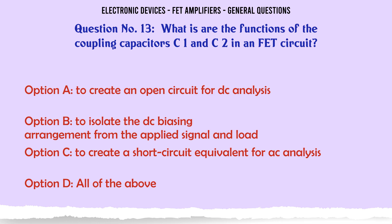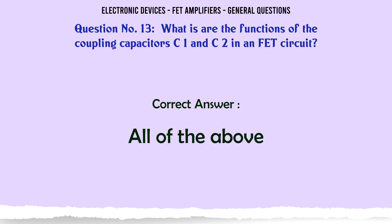What are the functions of the coupling capacitors C1 and C2 in an FET circuit? A. To create an open circuit for DC analysis. B. To isolate the DC biasing arrangement from the applied signal and load. C. To create a short circuit equivalent for AC analysis. D. All of the above. The correct answer is all of the above.